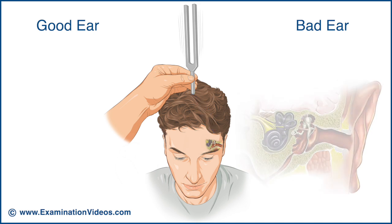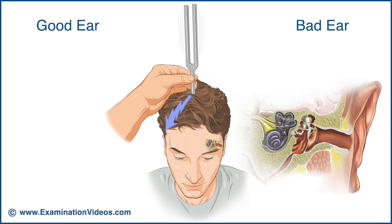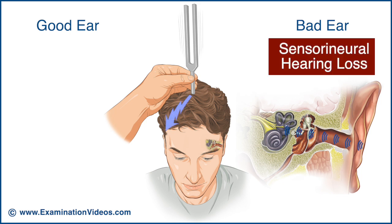If the patient reports the sound being louder in the good ear, this suggests sensorineural hearing loss in the bad ear, because the cochlea or neural pathways to the brain are damaged on that side. The right ear, however, is intact and can hear sound normally.